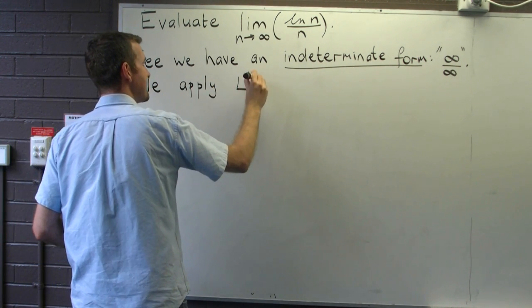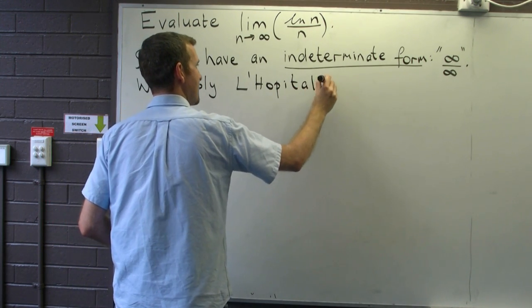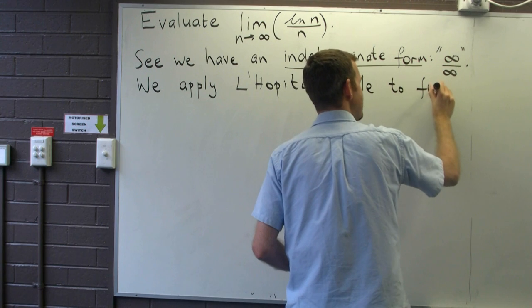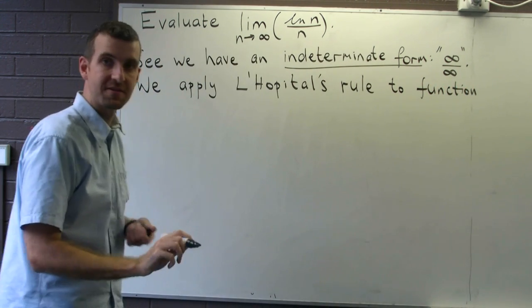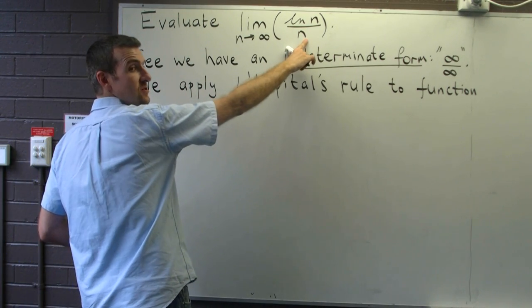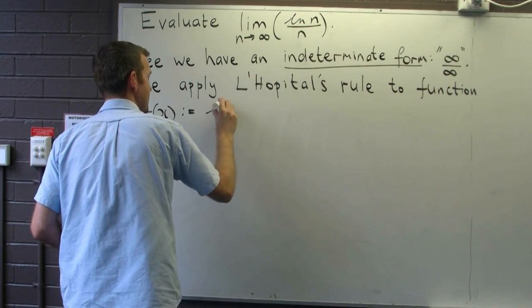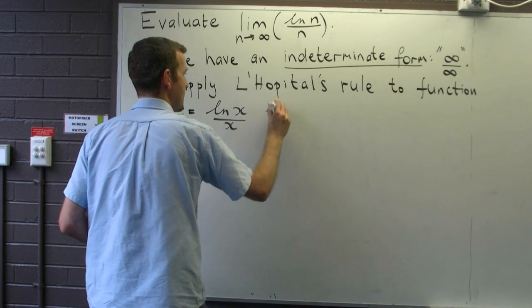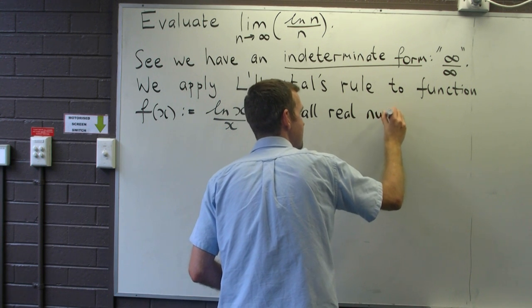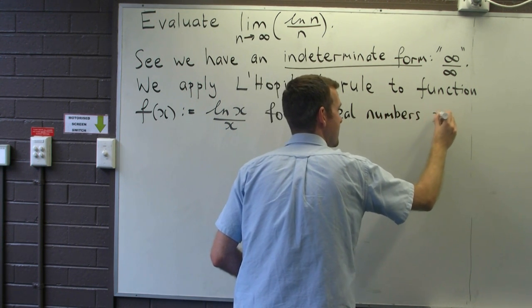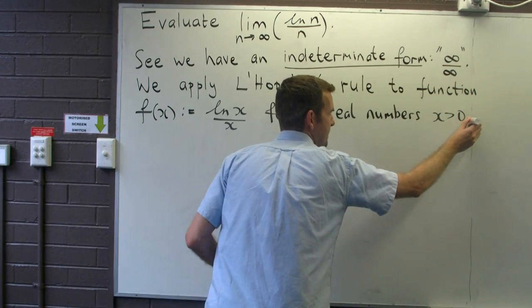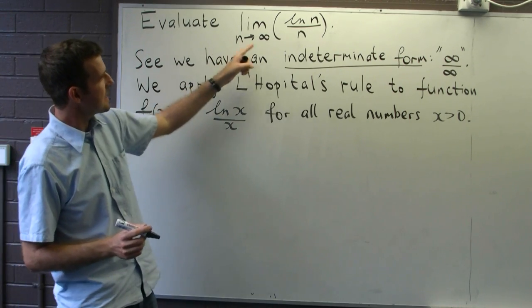We're going to apply L'Hôpital's rule to the function which we define in the following way. f(x) is just the function associated with the sequence — so f(x) = ln(x) / x. We're defining this function for all positive real numbers x, since log x is defined for positive values of x. Now let's get back to our limit.